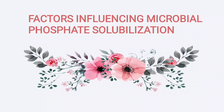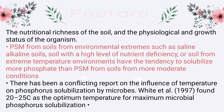Factors influencing microbial phosphate solubilization include the nutritional richness of the soil and the physiological and growth status of the organism. PSM from soils from environmental extremes such as saline, alkaline soils, soils with a high level of nutrient deficiency, or soils from extreme temperature environments tend to solubilize more phosphate than PSM from more moderate conditions. White et al. 1997 found 20 to 25 degrees Celsius as the optimum temperature for maximum microbial phosphorus solubilization.